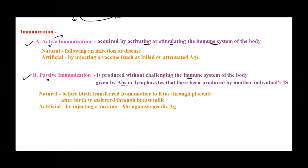In passive immunization, we give antibodies or sensitized lymphocytes that provide immune resistance to the person. The immune system is not activated, so this kind of immunization would be short term — it will not produce memory cells and will not last long. Whereas in active immunization, since the immune system is activated, memory cells are produced and the immune resistance is long term.